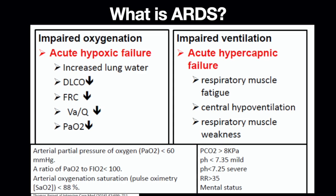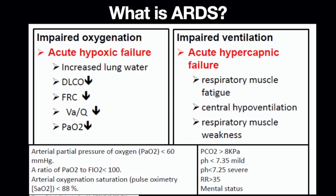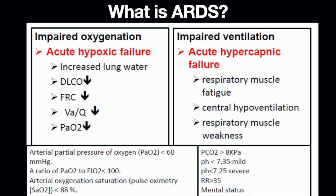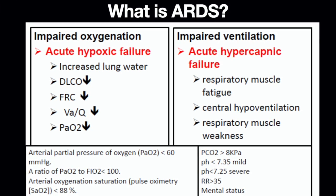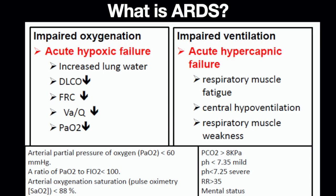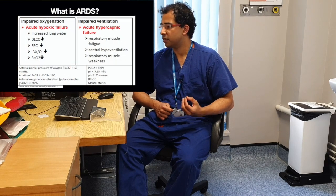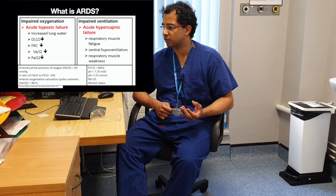Let us talk about type 1 respiratory failure. In this you have acute hypoxic failure which is due to increased lung water. There is shunting, there is a mismatch and there is hypoxia. Basically the PO2 is less than 60 mmHg or less than 7.5 kPa.